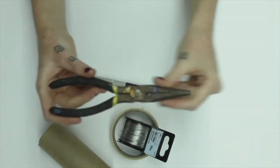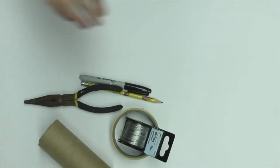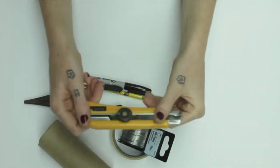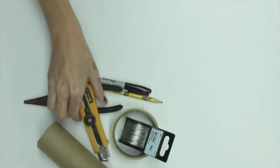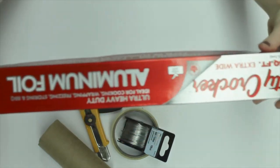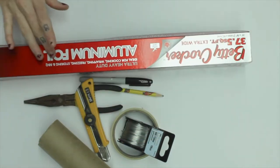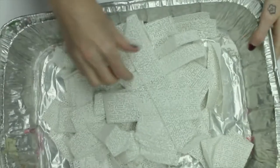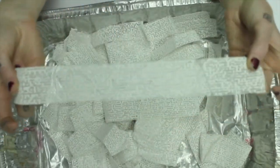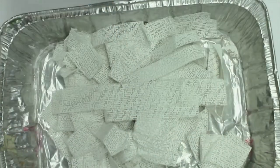You'll also need an X-Acto knife with a safety lock, some aluminum foil, and some plaster bandage strips. Now this you can totally find at your local craft store. It normally comes in a big roll like this and then I just cut the strips.